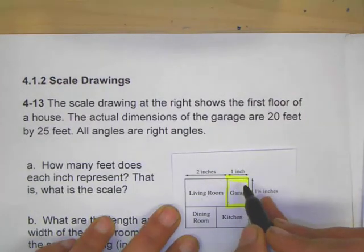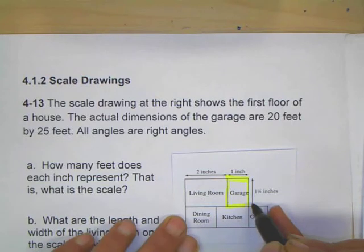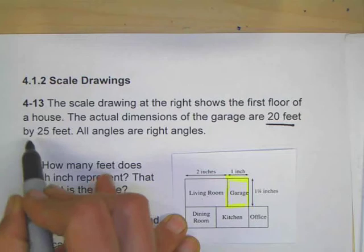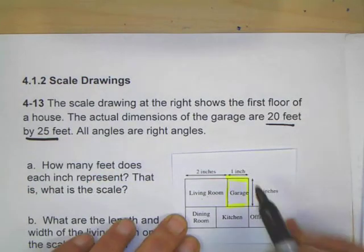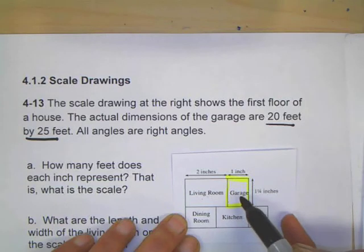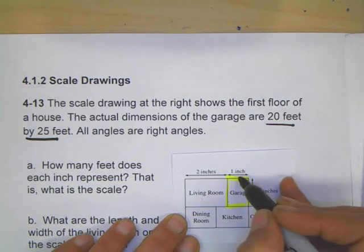It says here that the garage on the scale is 1 inch by 1¼ inches. It's already told us the actual size is 20 by 25 feet. It's asking, how many feet does each inch represent? What I'd like to do is look at this garage and say, okay, I know it's 20 by 25, so the shorter side...